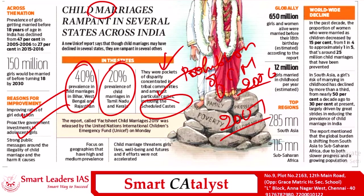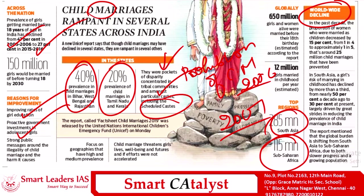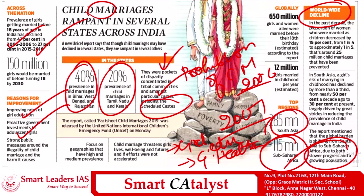The report titled 'Fact Sheet' notes child marriages declined from 47% to 27% in the past decade (2005–2015). This trend is worldwide, and there is a shift in the concentration of child marriages from South Asia to sub-Saharan Africa, due to slower progress and growing population there. The fact sheet calls for serious efforts in girl education through schemes like Beti Bachao Beti Padhao, improving girl child health — as most girls below 18 in India are anemic — and greater awareness. Empowering women and the girl child is the only way to stop this menace.